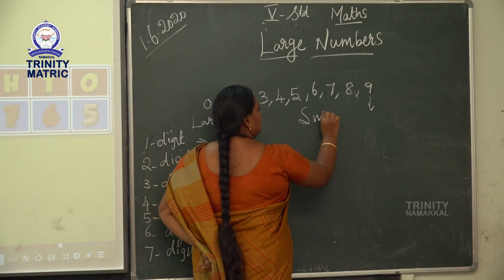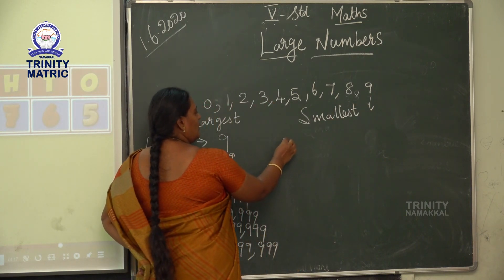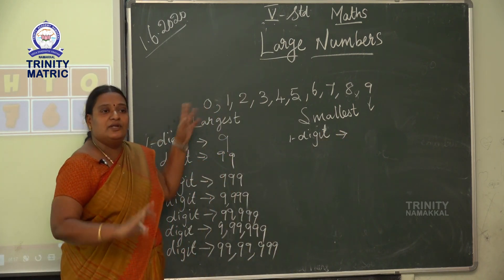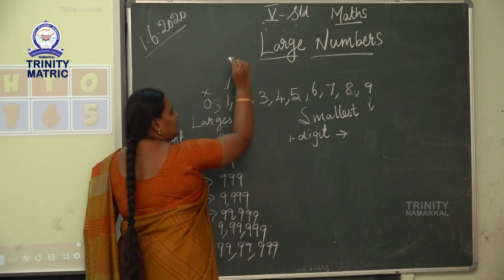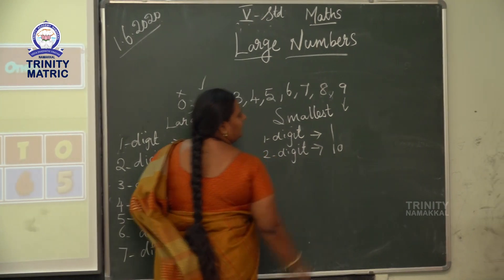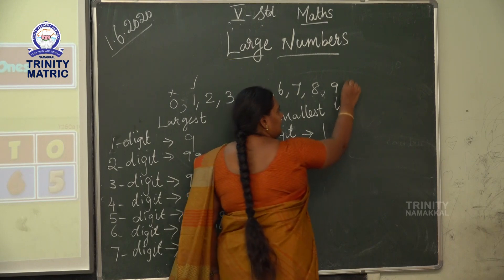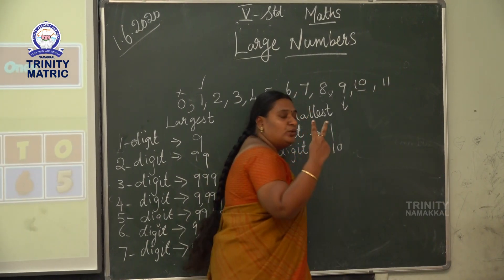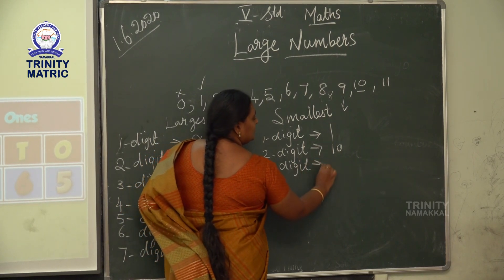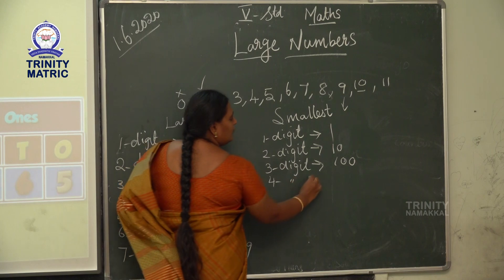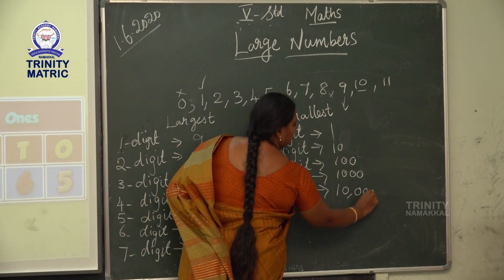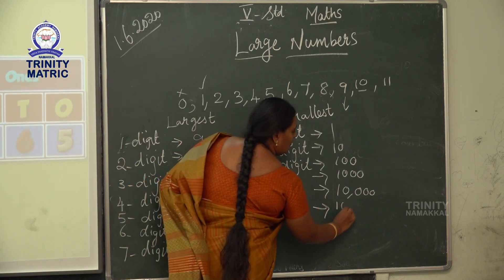Now, which is the smallest one-digit number? Zero does not have value, so we do not take 0. Take 1 as the smallest one-digit number. The smallest two-digit number is 10, because after 9 we get 10. The smallest three-digit number is 100. The smallest four-digit number is 1,000. The smallest five-digit number is 10,000. The smallest six-digit number is 1 lakh.